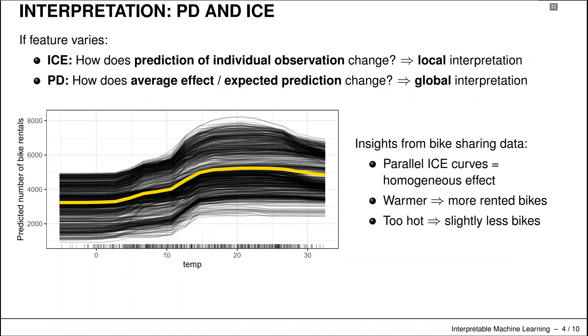And then there's a mild downward slope at the end, because if it gets too hot, I guess people become a little bit too lazy to ride a bike.